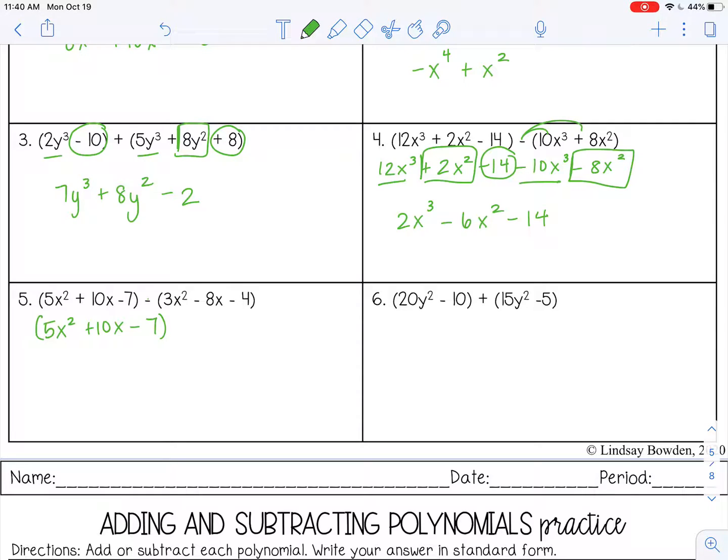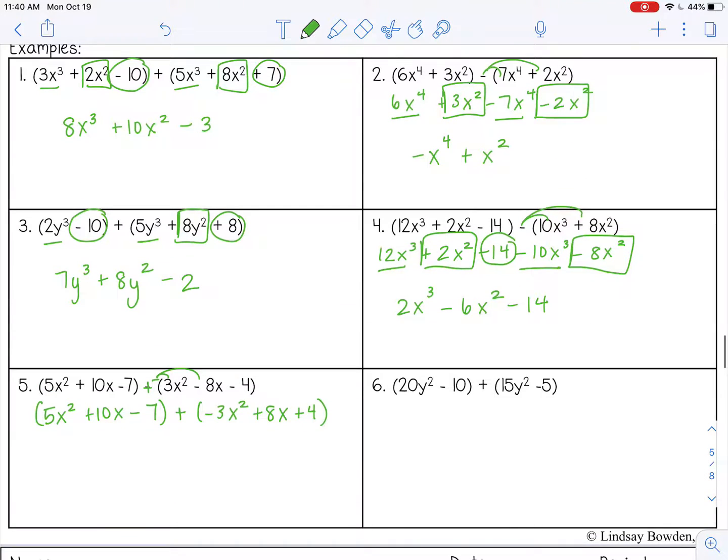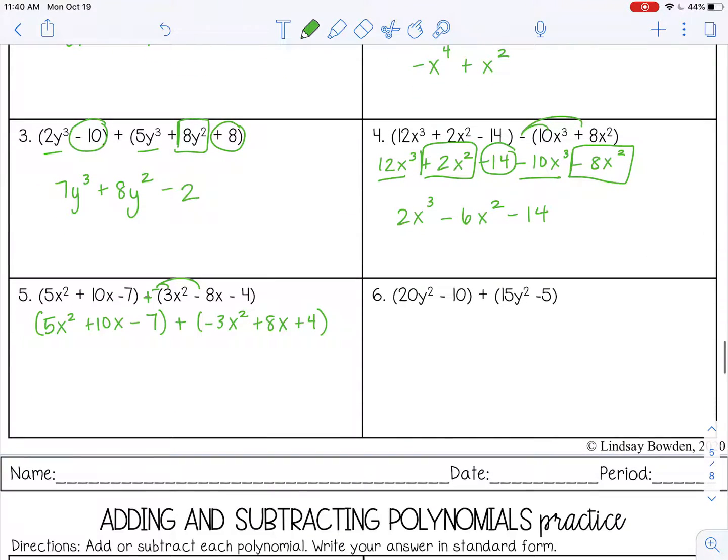You can change this to—it's really like adding a negative. When you subtract, you're adding a negative. So I'm going to distribute that negative inside here. Negative times—negative 1 times negative 8 is positive 8x. Negative 1 times negative 4 is positive 4. If you don't like it that way, you can just write it out like I did on number 2 and number 4. It's up to you.